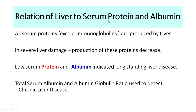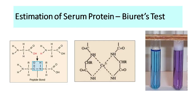What is the relation of the liver to serum proteins and albumin? All serum proteins except immunoglobulins are produced by the liver. In severe liver damage, the liver is not able to produce these proteins, resulting in decreased blood protein and albumin levels, which indicates long-standing liver disease. Total serum albumin and albumin-globulin ratio are also used to detect chronic liver disease.